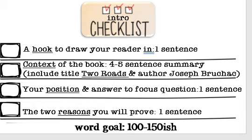After you have written your four to five sentence summary, you are going to write one sentence that states your position — either yes, Cal should return to Chilagy Indian School, or no, Cal should not return to Chilagy Indian School. The last sentence of your paragraph states two reasons that you will prove in this essay. So, what are two reasons that support your position?